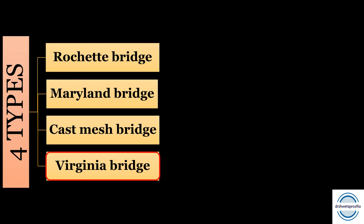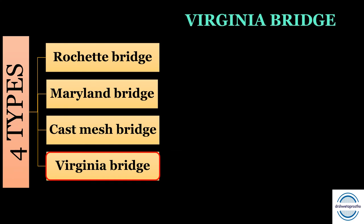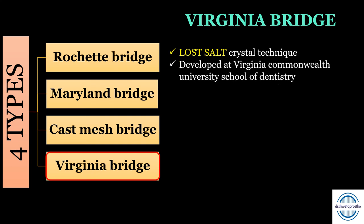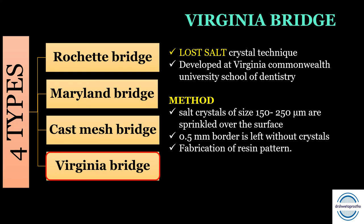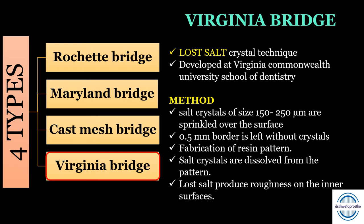Fourth are the Virginia bridges, fabricated using the lost salt crystal technique. Developed at Virginia Commonwealth University School of Dentistry. Within the retainer outlines, 150–250 micrometer salt crystals were sprinkled over the abutment surface, leaving borders intact with 0.5 mm without crystals to make the margin seal. After resin pattern fabrication, the salt crystals are dissolved, creating roughness on the inner surfaces of the metal wings which provides retention.